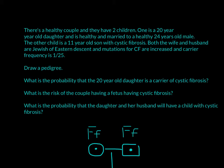The questions for this problem are: draw a pedigree; what is the probability that the 20-year-old daughter is a carrier of cystic fibrosis; what is the risk of the couple having a fetus with cystic fibrosis; and what is the probability that the daughter and her husband will have a child with cystic fibrosis? Try this out, and then I'll explain the answer.